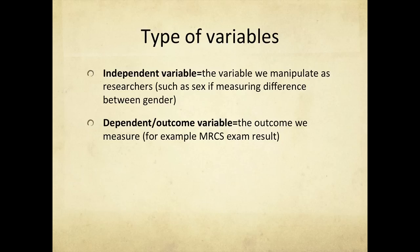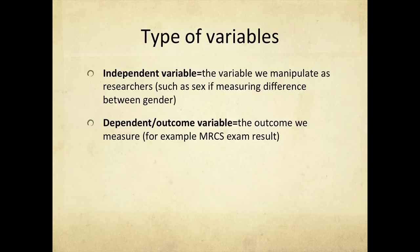The first thing we need to ask ourselves is: what type of dependent variable do you have? To cover the basics — an independent variable is the variable that we either manipulate as a researcher, or is a difference between particular groups within our study. For example, in a study looking at whether MRCS exam scores differ by gender, the independent variable would be gender. The dependent variable, sometimes called the outcome variable, is the thing you are measuring — in this case, the MRCS exam result.